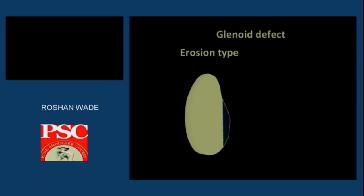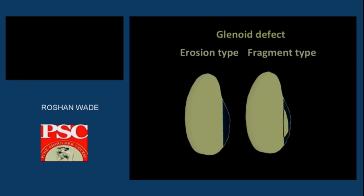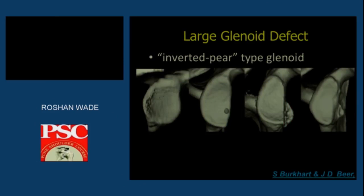Glenoid defects can be described as erosion type — erosion of the anterior rim due to repetitive micro-trauma, repetitive subluxation, or dislocation — or as fragment type, which is a direct impact or injury on the glenoid. Dr. Ashish Babulkar mentioned Steve Burkhart and Jody Bear, who described the inverted pear-shaped glenoid, where the inferior margin has lost surface area important for the compression concavity effect on the shoulder joint.